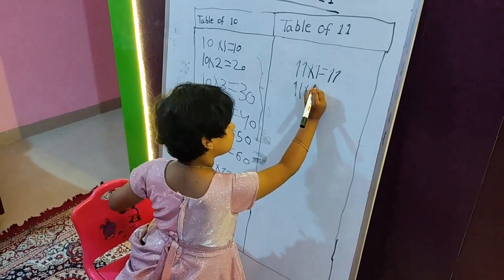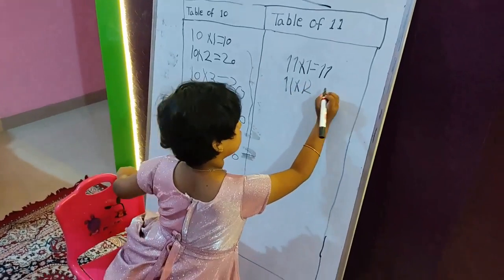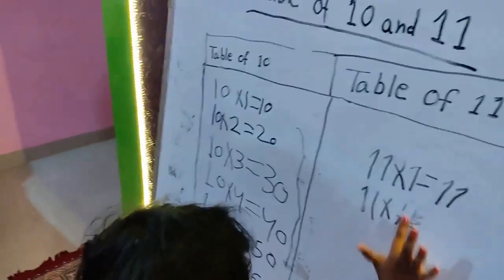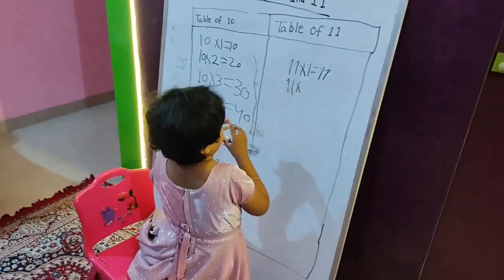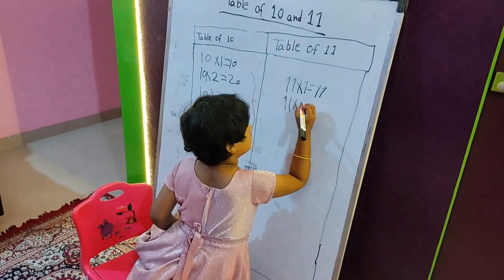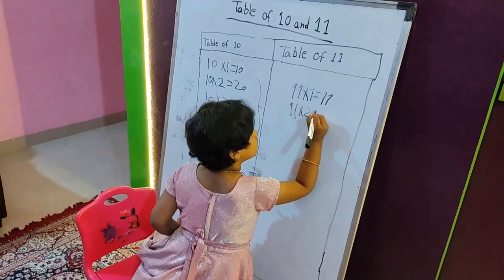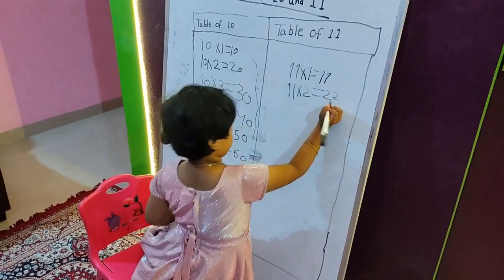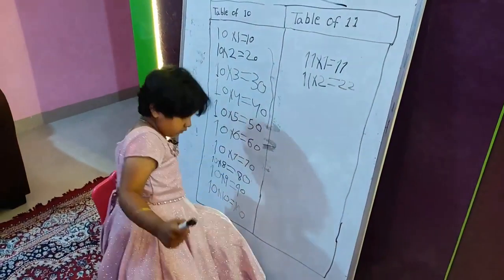Eleven times two, two. You erase it please. Two, two. I make. Okay, eleven times two equals twenty-two. Do you know what I like? Yeah.